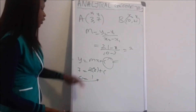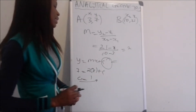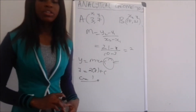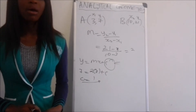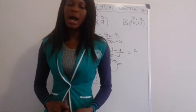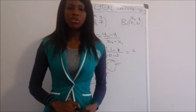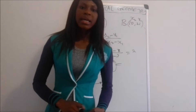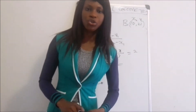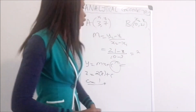We found that c = 1. So the equation is y = 2x + 1, where m = 2 and c = 1. That means the y-intercept of this line is the point (0, 1).